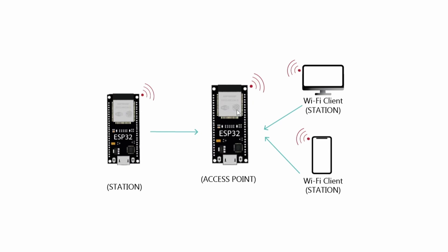The second mode is called Access Point. In this mode, the ESP32 will act like a router — it's going to create a Wi-Fi network. All devices get connected to it using its own SSID and password that we can set from the code. We can then control the ESP32 using an IP address, even from another ESP32 that operates in Station Mode.